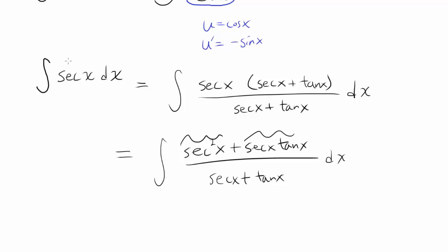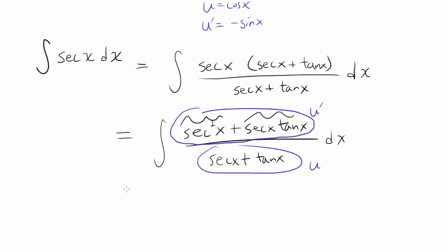So if we let our u be secant of x plus tangent of x, we have our u' right up top. So this thing is just natural log of absolute value of u or secant of x plus tangent of x plus c.